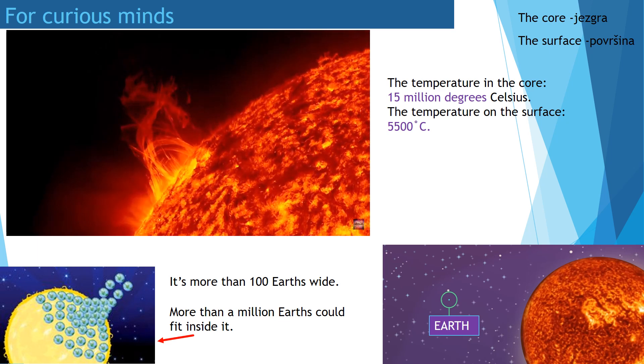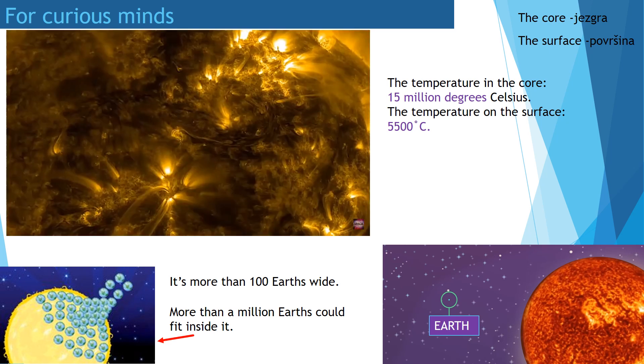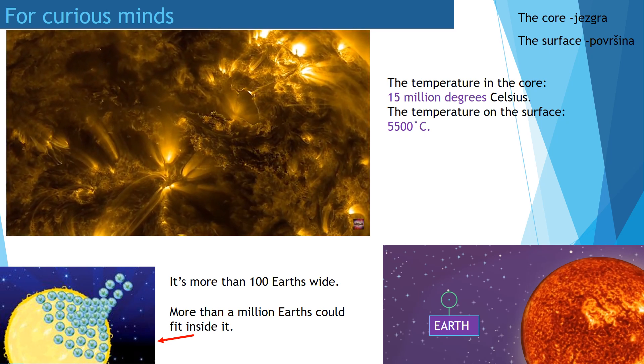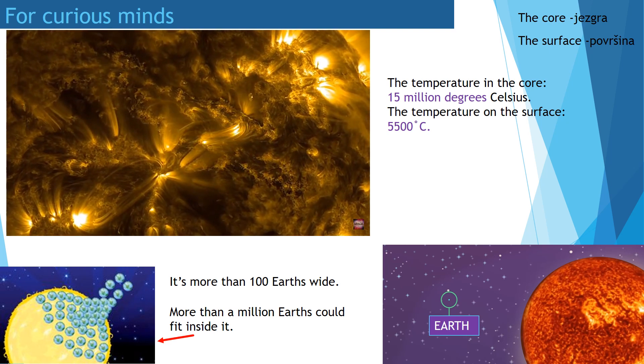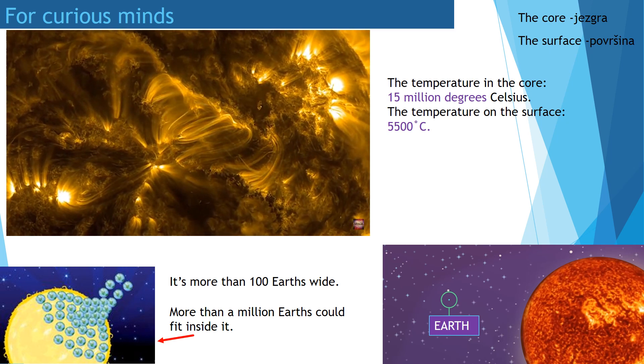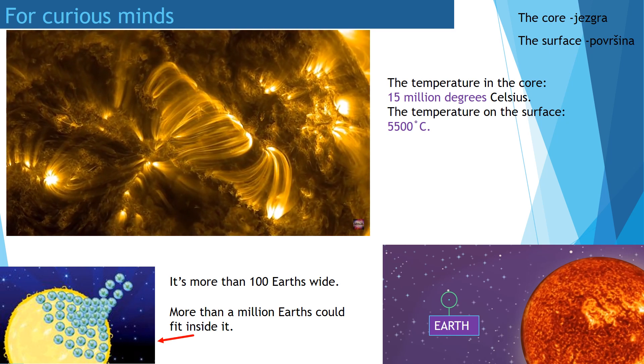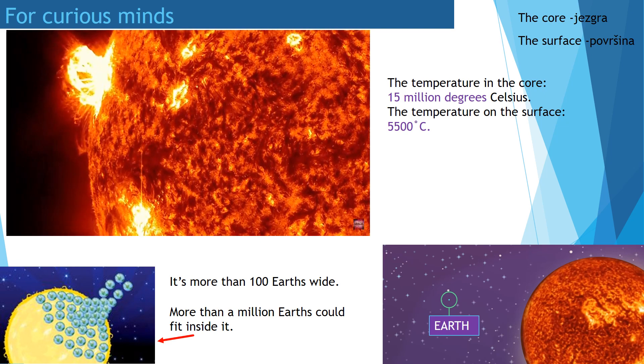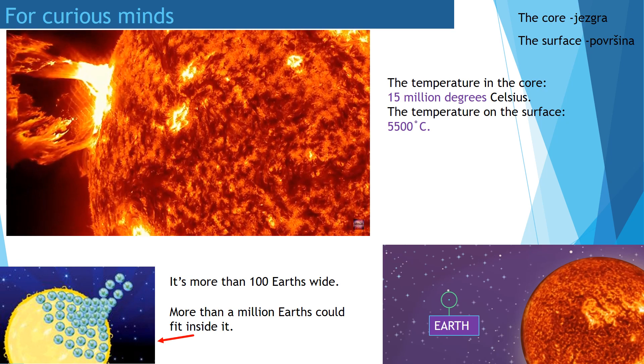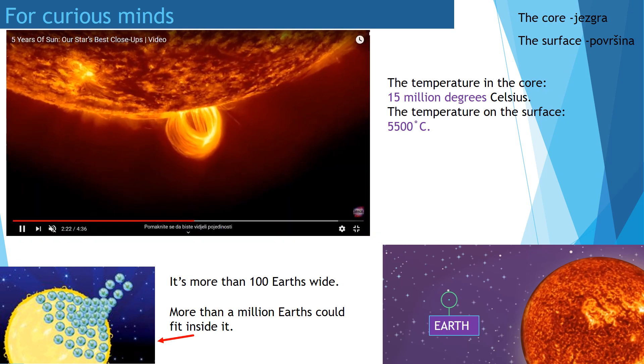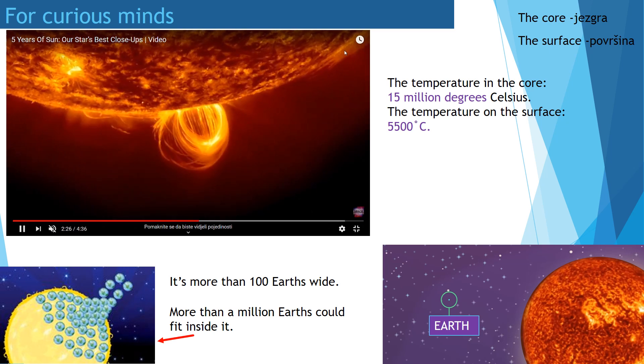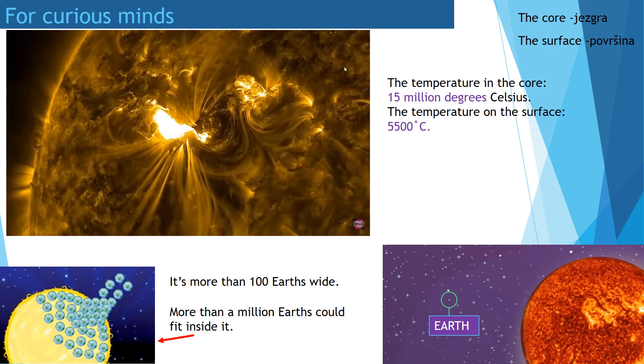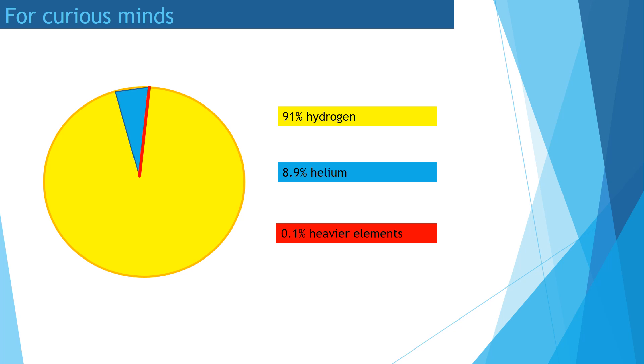As you can see on this video, sun's surface is not still. A lot of explosions happen on the sun's surface because the sun is made of some gases. The sun is made of 91% of hydrogen, 8.9% of helium and only 0.1% of heavier elements.